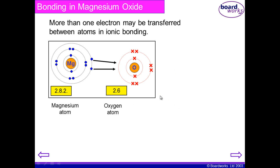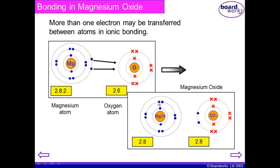Magnesium, because it has an empty outer shell and has lost the two electrons, now has a positive charge. Magnesium has a proton number of 12 and it has lost two electrons, so it did have 12 electrons but now has 10, hence a 2+ charge. The oxygen had six electrons in its outer shell but gained two more. Because oxygen has a proton number of eight and now has ten electrons, it has a 2− charge.